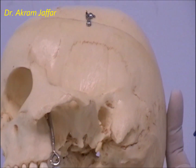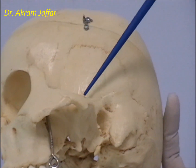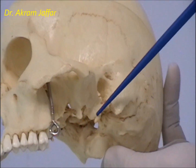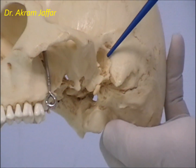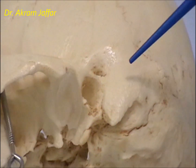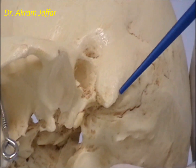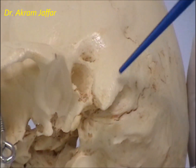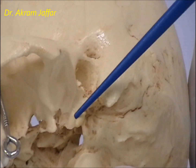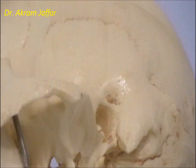The temporal bone is formed of four parts: the squamous part, which has the zygomatic process; the styloid part; the tympanic plate; and the petrous part, which has a downward prolongation on the lateral side of the skull called the mastoid process — sometimes referred to as the petromastoid part.